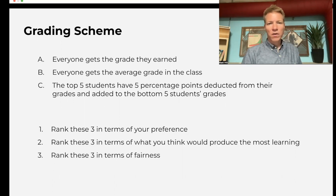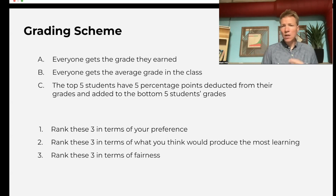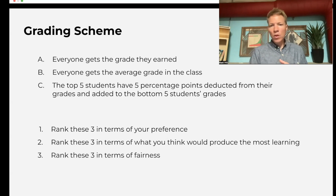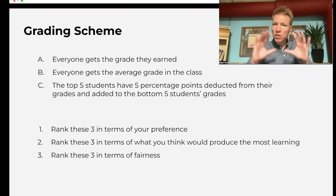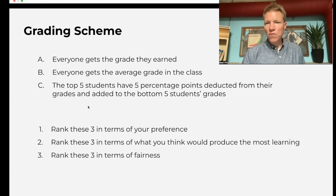Scheme C: the top five students have five percentage points deducted from their grades and added to the bottom five students' grades — a little redistribution. You want students to think about which of these schemes they would prefer, which one would produce the most learning, and what is fair. There are no right or wrong answers; it's just to think about how different rules can affect performance.